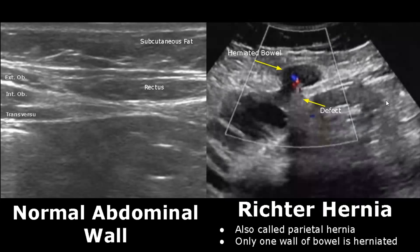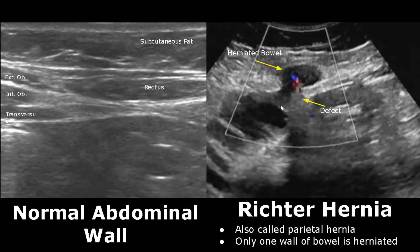A Richter hernia is difficult to see on ultrasound; it is also called a parietal hernia. In this type, only one wall of the bowel is herniated — in other words, only one side or one half of the bowel loop is herniated while the other wall or the other half is not herniated.